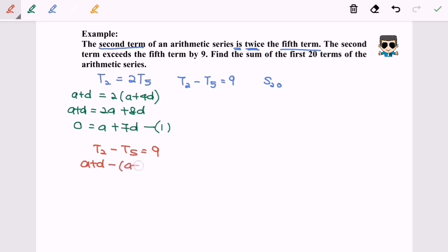...a plus 4d equals 9. Simplifying, we have a minus a is 0, d minus 4d gives negative 3d equals 9, so d equals negative 3. Substituting d equals negative 3 into the first equation, we get a equals 21.